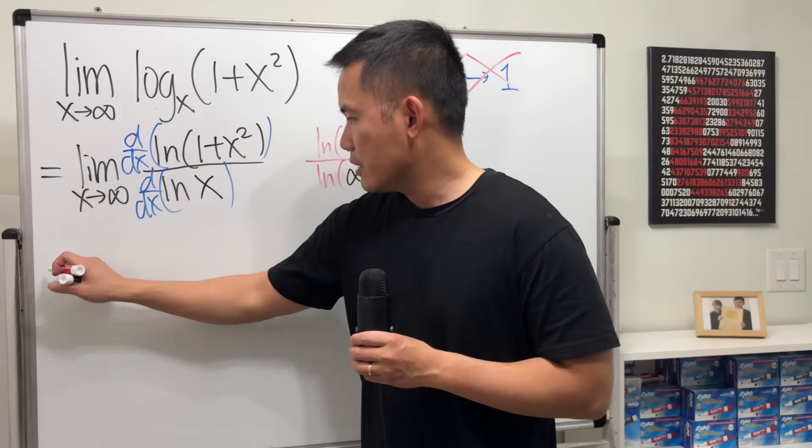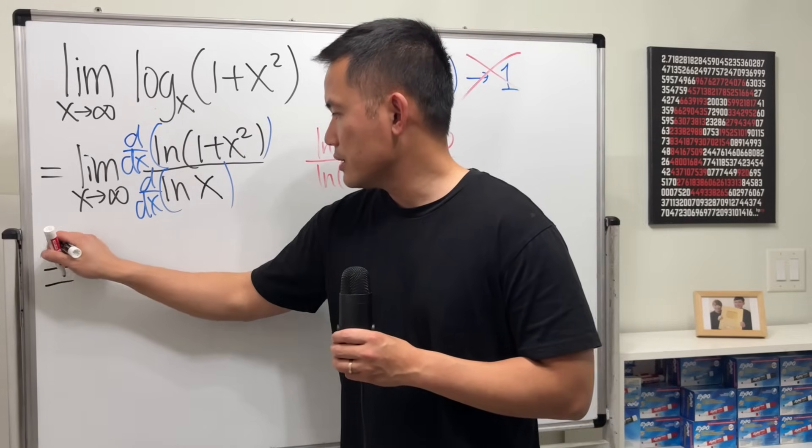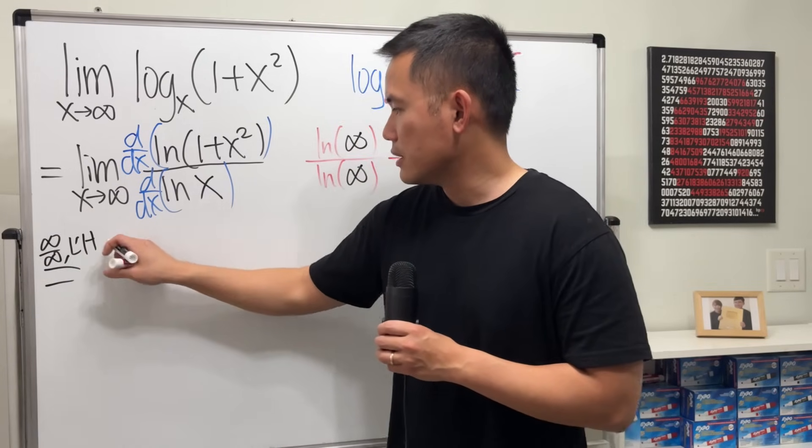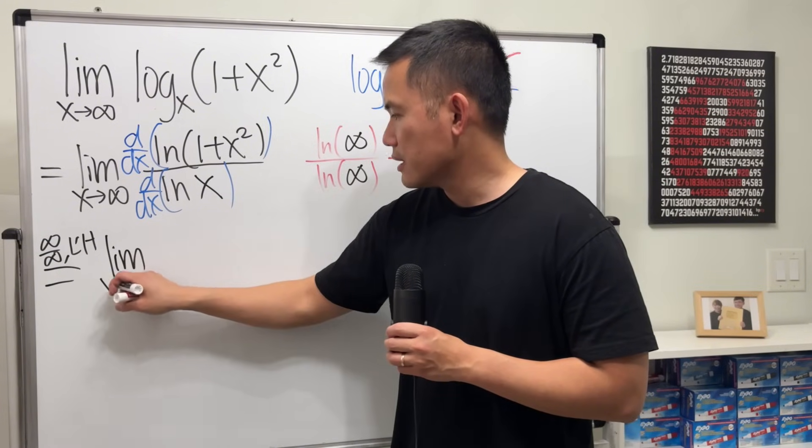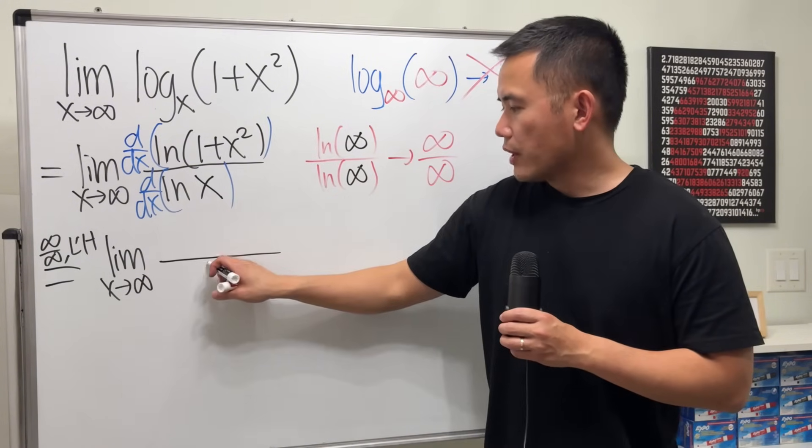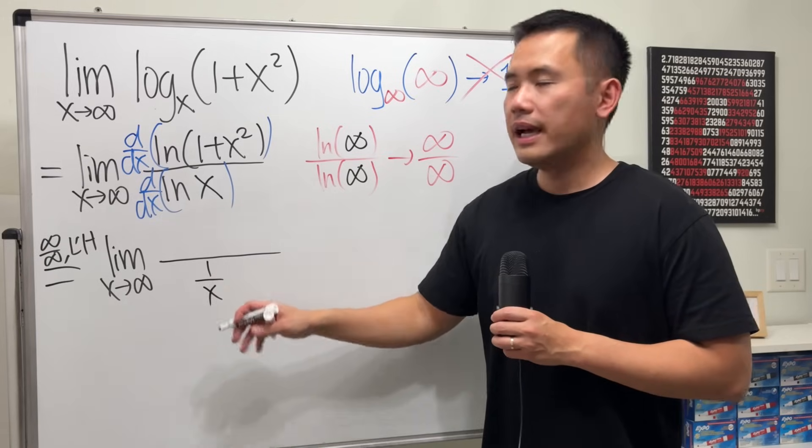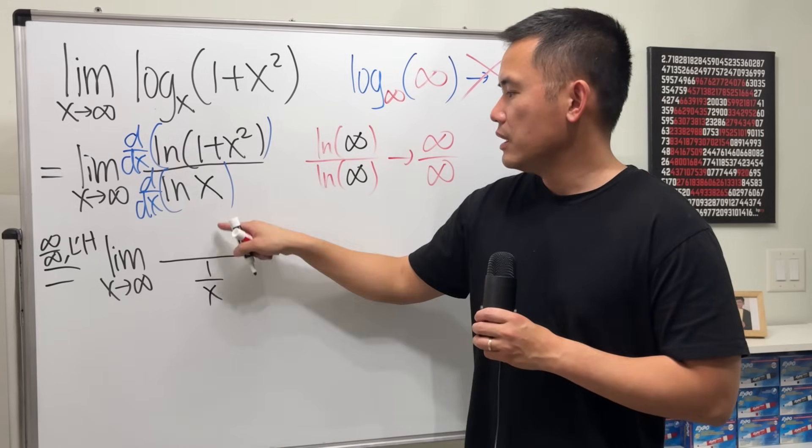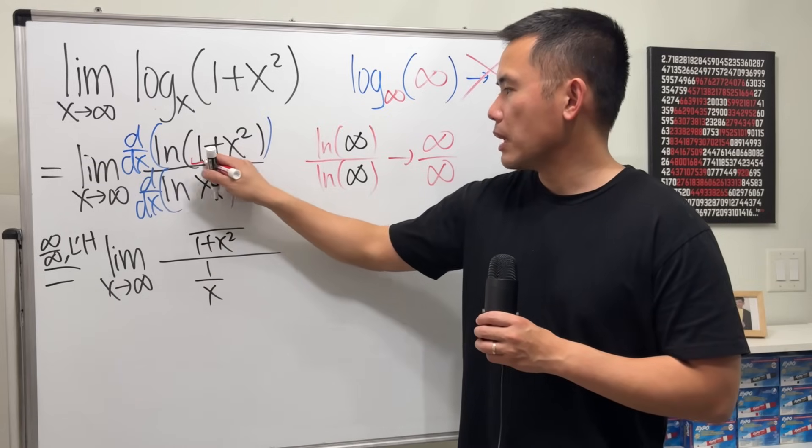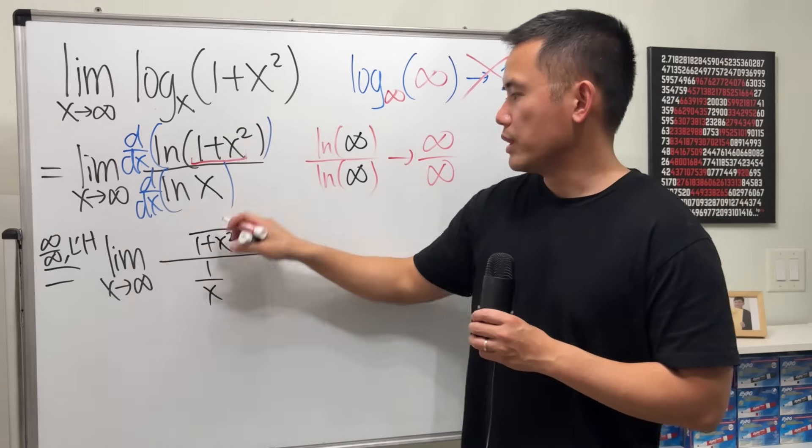And then here, again, this is an infinity over infinity situation. Use L'Hopital's. This is the limit as x approaching infinity. The derivative of ln x is just 1 over x, and the derivative of ln of 1 plus x squared is 1 over 1 plus x squared, but we multiply by the derivative of the inside, which is 2x.